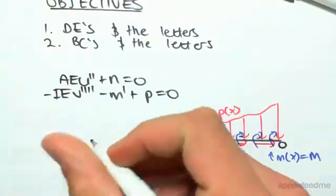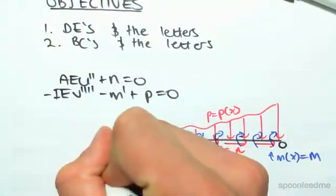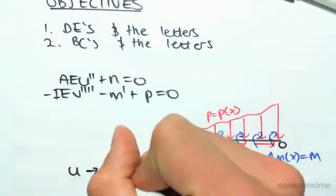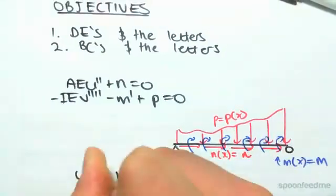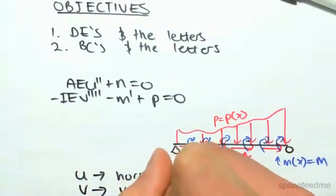U double dash is the second derivative of U. U is what we're actually going to be finding, which is any horizontal displacement. V is any vertical displacement.